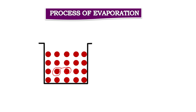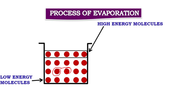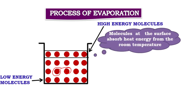Kinetic energy is a form of energy associated with the speed of an object. Since the motion of particles is different, the kinetic energy in particles is different. The surface molecules have high kinetic energy as compared to the bottom molecules. The surface molecules absorb heat energy from the room temperature, as they are in contact with the atmosphere.